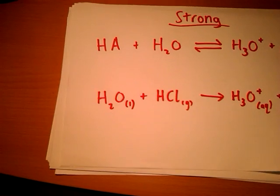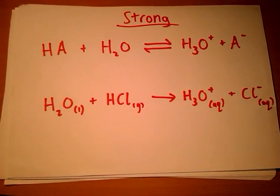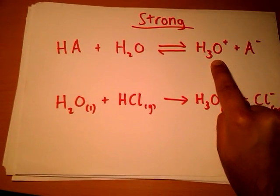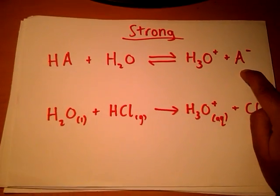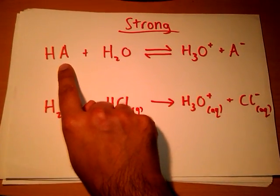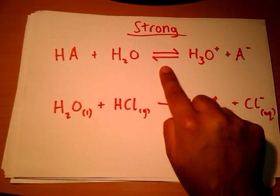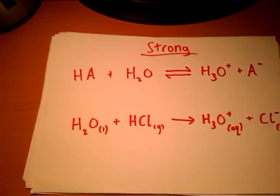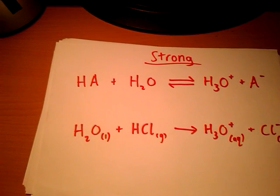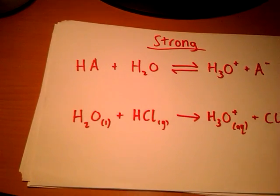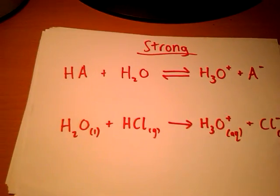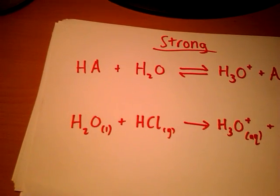Let's have a look at strong acids. The equation at the top is a typical equation for the dissociation of a strong acid. We have the strong acid plus water, giving hydroxonium ions and a negative ion. This negative ion depends on the acid that you use. Now, the reaction is reversible, so it can proceed in both directions. But because acids are so good at donating hydrogen ions, in most cases the reaction only occurs in one direction, so it can be considered virtually as a one-way reaction.